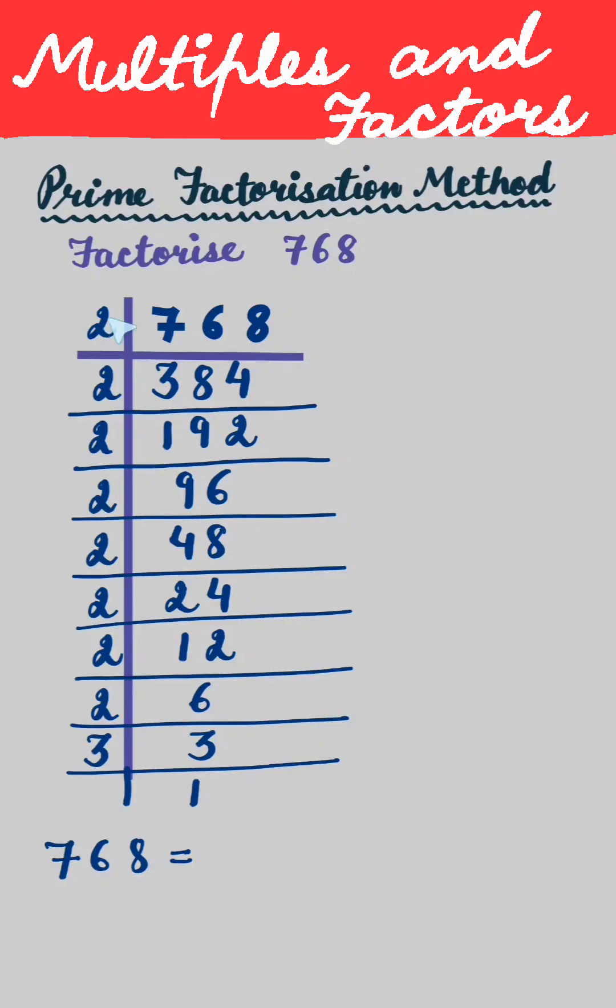Now 2 is how many times? 1, 2, 3, 4, 5, 6, 7, 8. So we'll write here 2 eight times into 3. So these are the factors. Thank you.